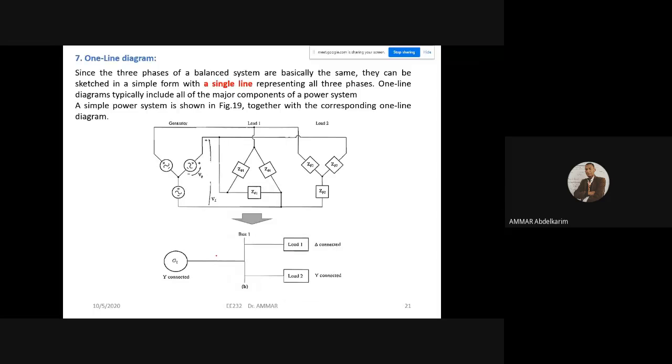If we have, for example, a transformer, it will be represented like this, with two circuits. Okay, so this is the one-line diagram.